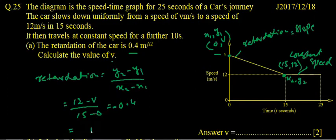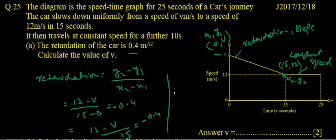When we simplify it, it becomes 12 minus V upon 15 is equal to minus 0.4. Or we simplify it, it becomes 12 minus V is equal to 0.4 multiplied by 15, or 12 minus V is equal to...